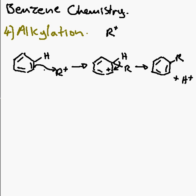Now the first thing we need to add is to draw this as the Wheland Intermediate, for anyone who has been taught that so far. And trying to keep a diagonal between where the circle is drawn, make this into a nice delocalized ring.